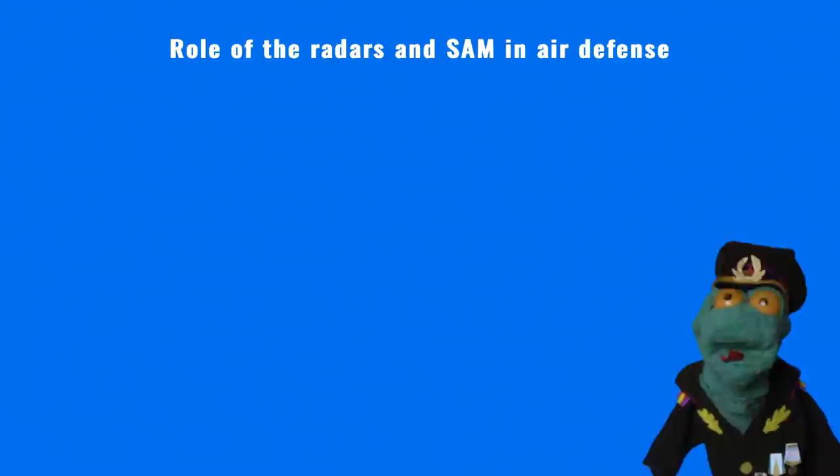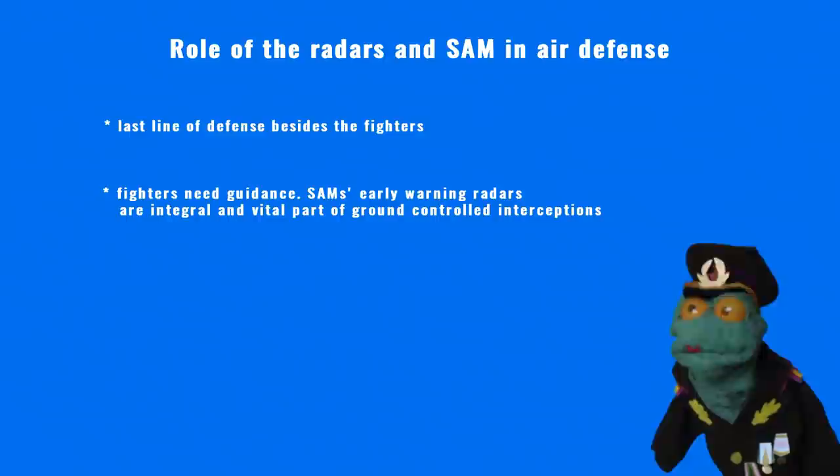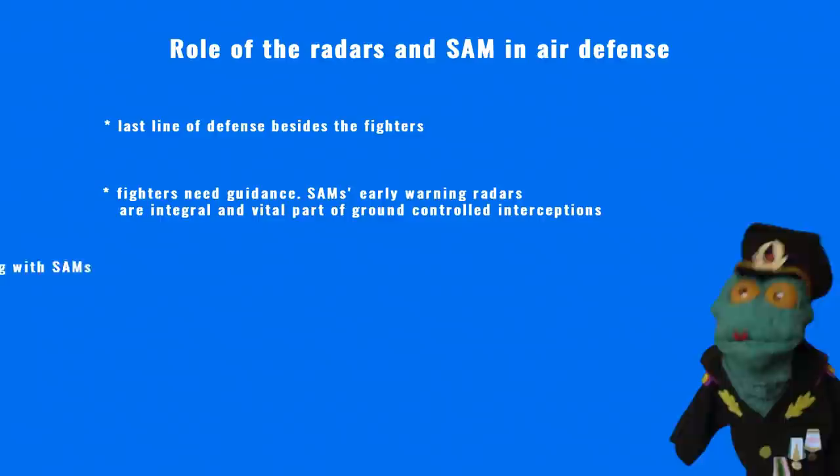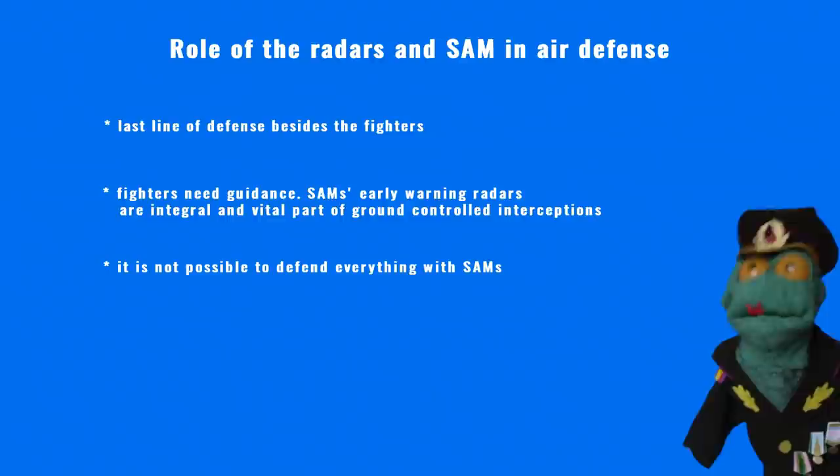It is important to understand the role of the S-25 Berkut system. It was only the last line of defense around Moscow, but it was not the only tool meant to stop the bombers of the US Strategic Air Command and British bombers. This remark is true for every SAM system in every era, and still holds today. Nobody expected that ground-based air defense alone could stop the incoming bombers.